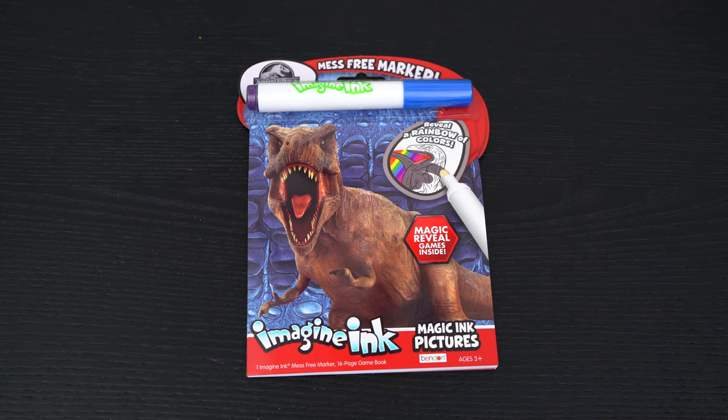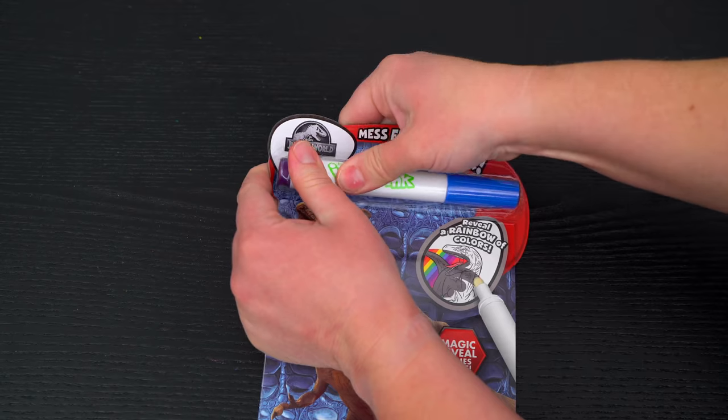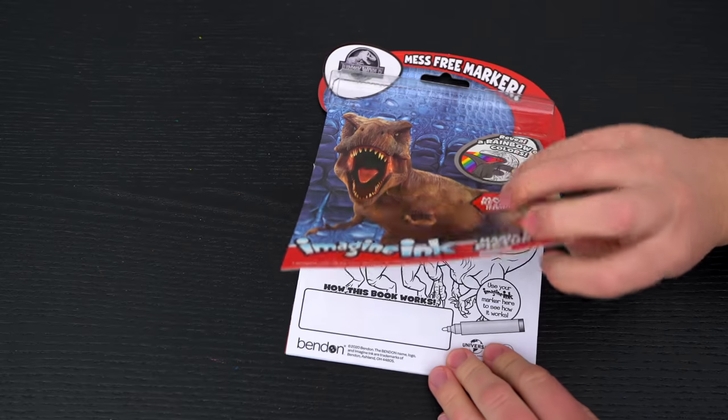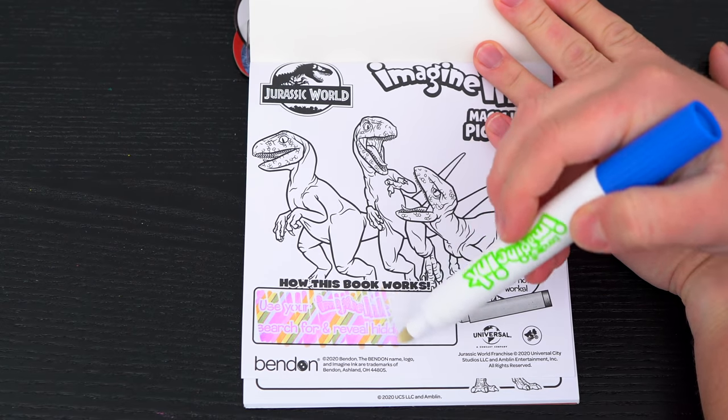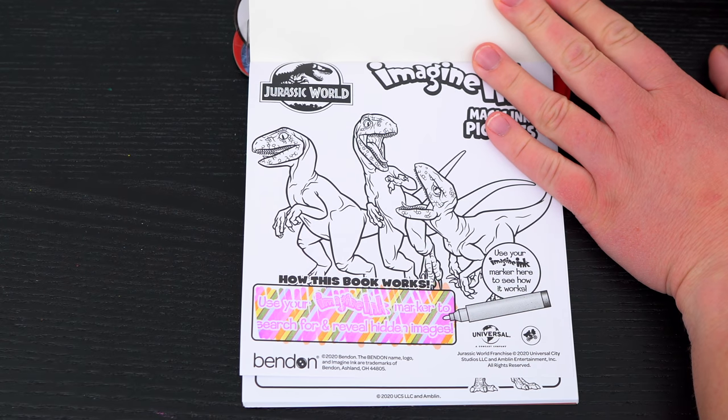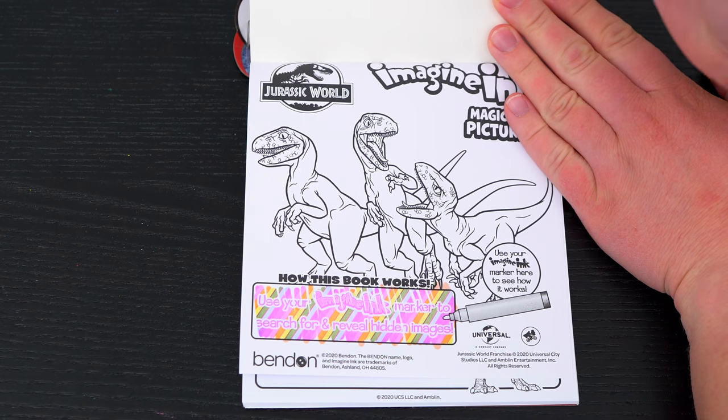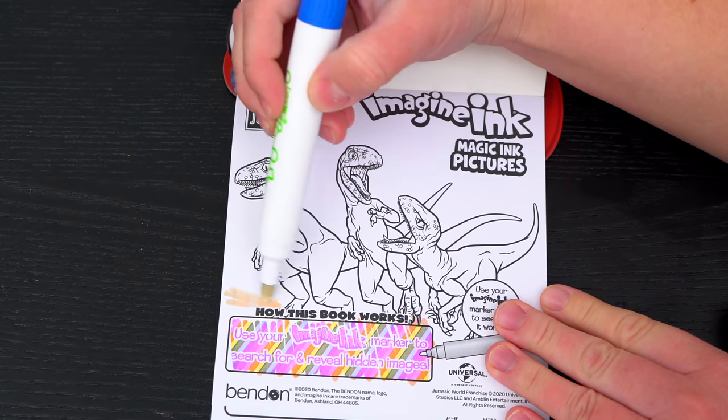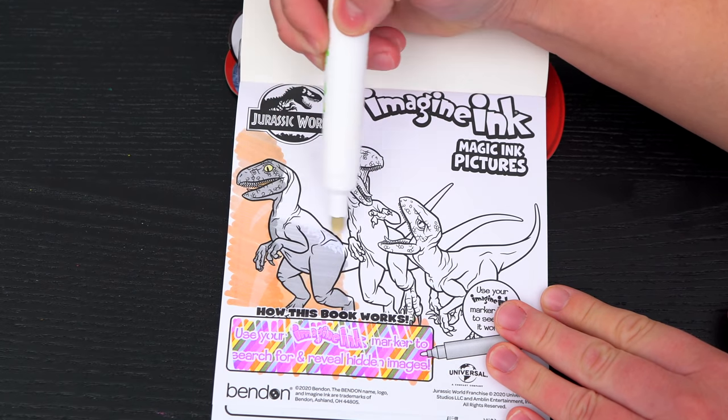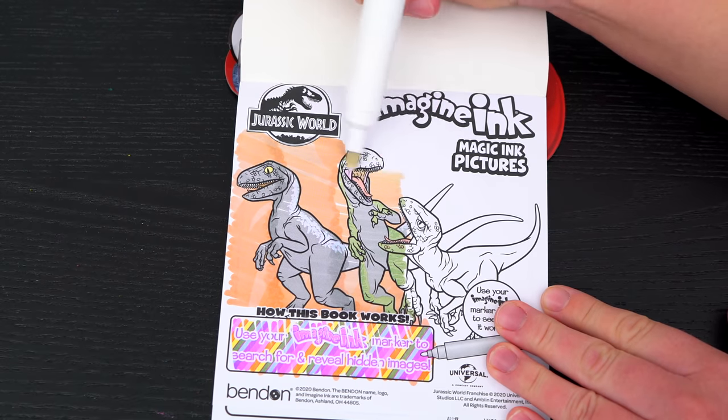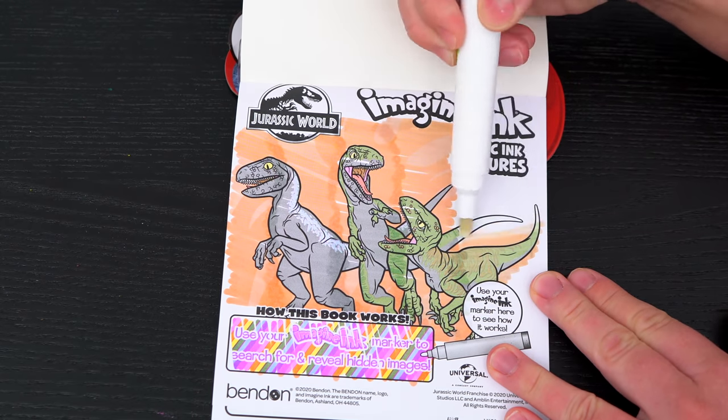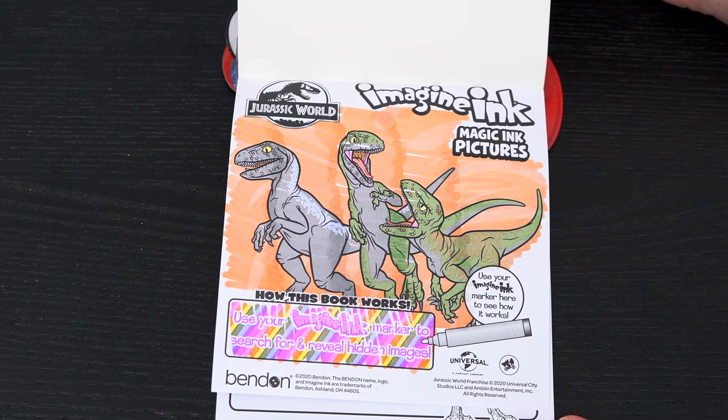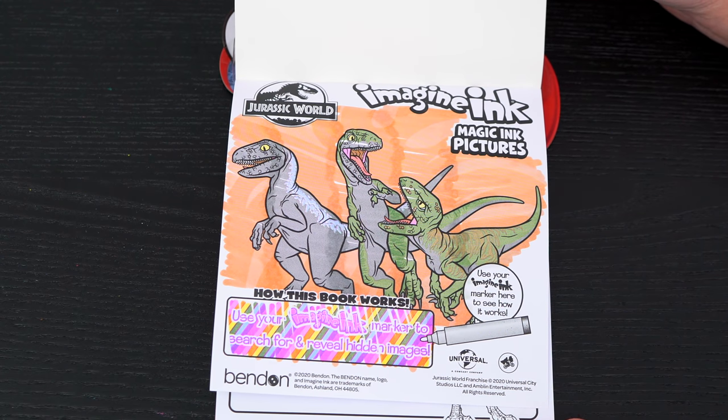Okay, so first we need to remove our Imagine Ink marker. It says use your Imagine Ink marker to search for and reveal hidden images! Let's try it out on this picture up here! So awesome! Let's see what's on the next page!